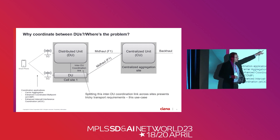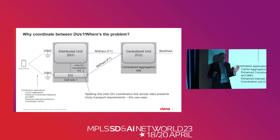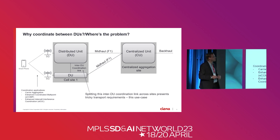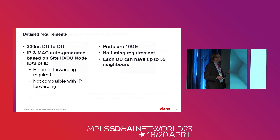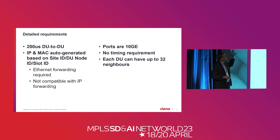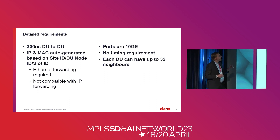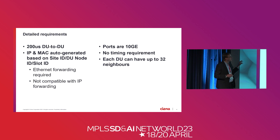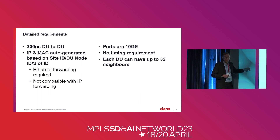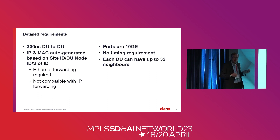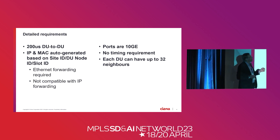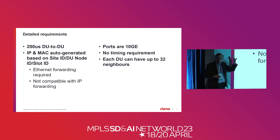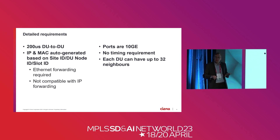In this first use case, what we'll talk about is that coordination link and splitting it across multiple sites, because that's where it gets very interesting from a transport perspective. The technical requirements on that inter-DU link: there was a requirement of 200 microseconds DU to DU, quite tight for transport. The IP and MAC were auto-generated by the equipment in a way that was a tad non-standard. Therefore, Ethernet forwarding was required because subnetting didn't really work with this IP generation, so we had to be looking at L2 EVPN rather than any form of L3. The ports were conveniently 10 gig. No timing requirement via this mechanism, since timing was already being done via the mid-haul interface.